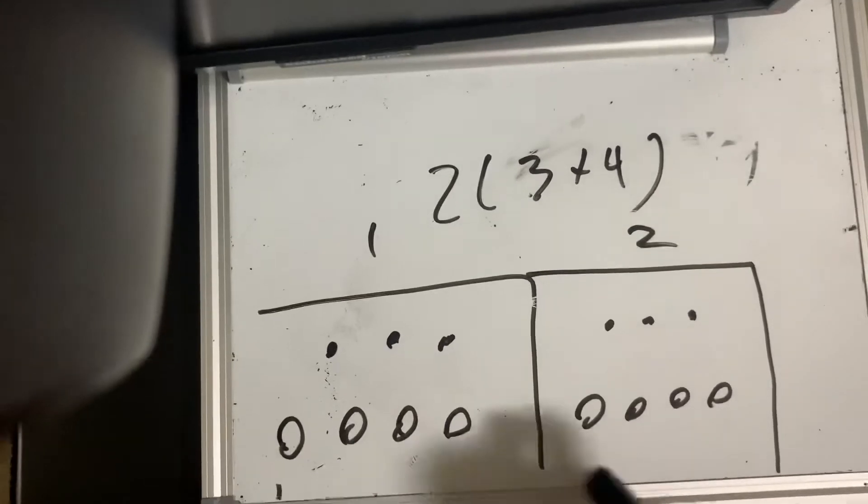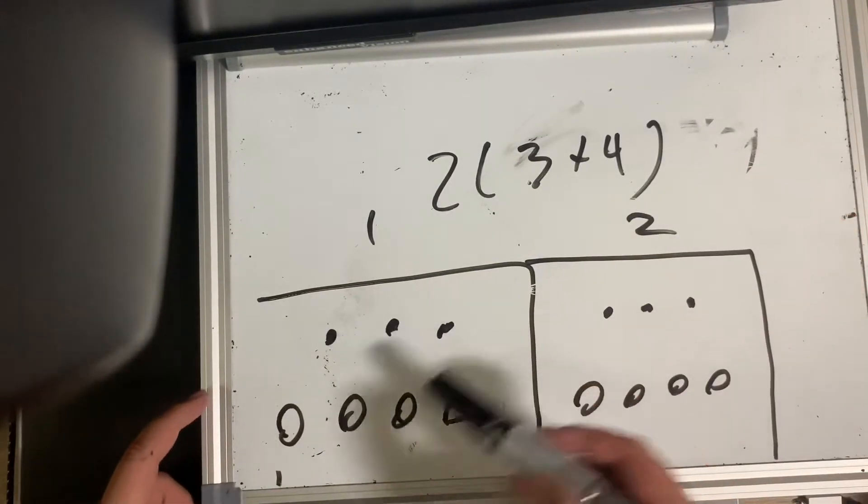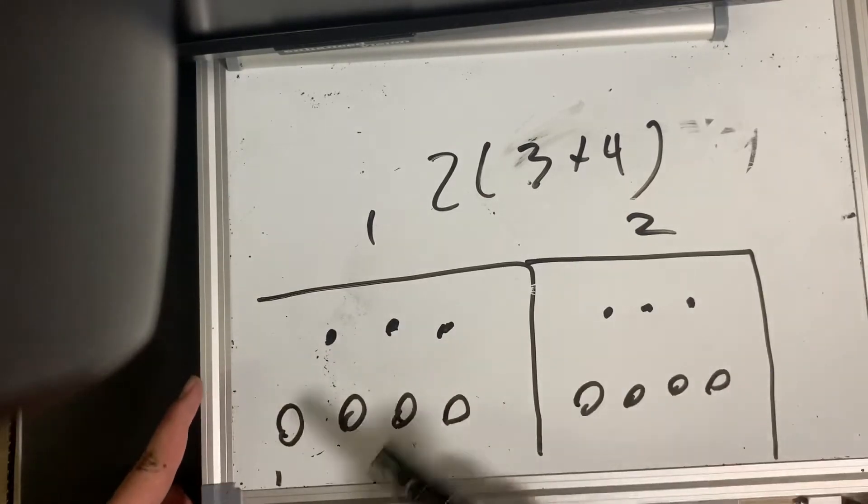Now, we know in total in each group there's 7 because the original value here was actually 7. So, 1, 2, 3, 4, 5, 6, 7. And we know that 2 of them in total would make 14.